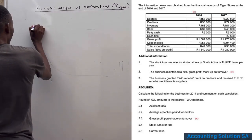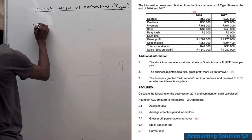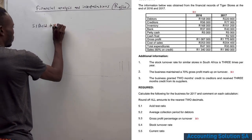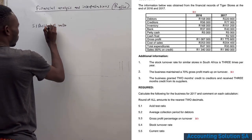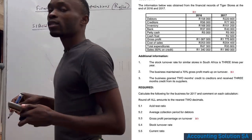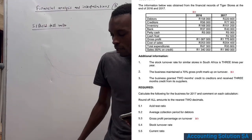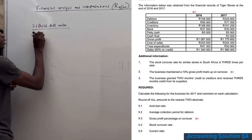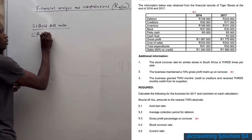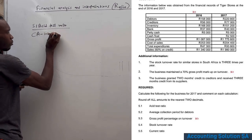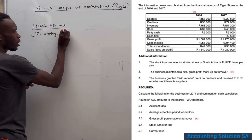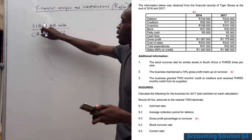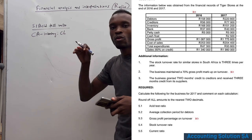Question 5.1 asks us to calculate the acid test ratio. The first step is to lay down the formula: current assets minus inventory, divided by current liabilities.